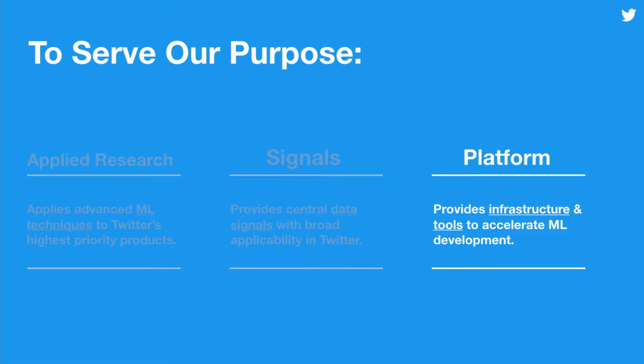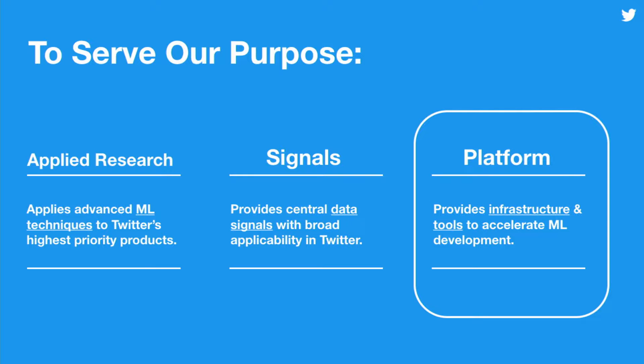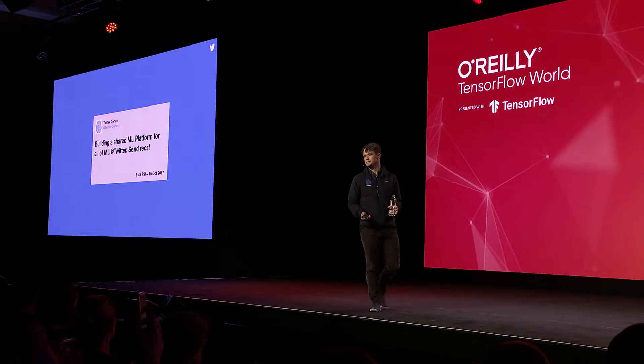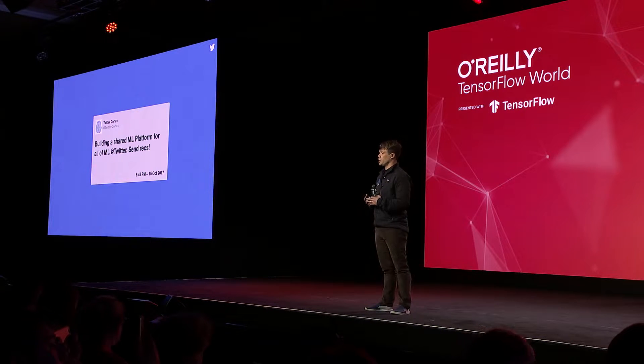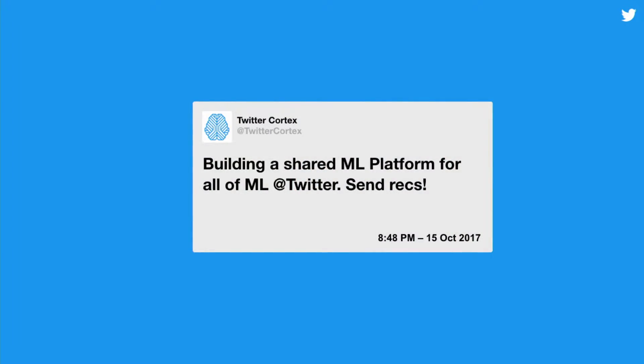The third organization is our platform team, which is really the origins of Cortex. Here we provide tools and infrastructure to accelerate ML development at Twitter and increase the velocity of our ML practitioners — and this is the focus of the conversation today. When we set out to build this ML platform, we decided we wanted a shared ML platform across all of Twitter. That's important because we want transferability: great work being done in the ads team should, where possible, benefit the health initiative. And if great talent in the consumer team wants to move to the ads team, being on the same platform means they can transfer without friction and ramp up quickly.